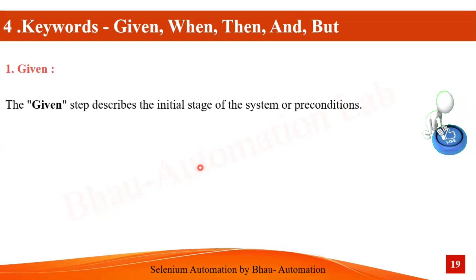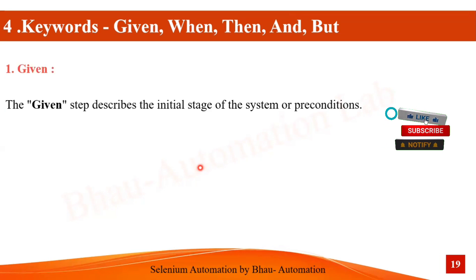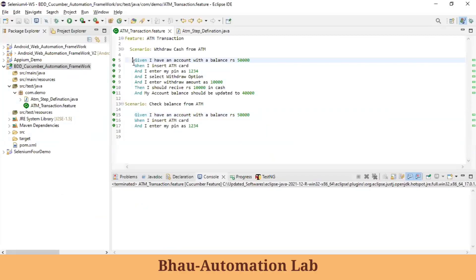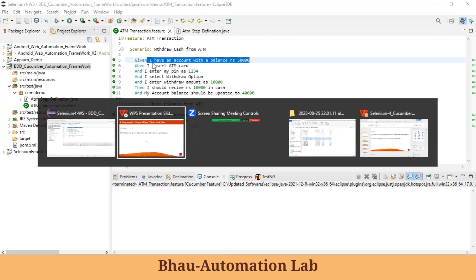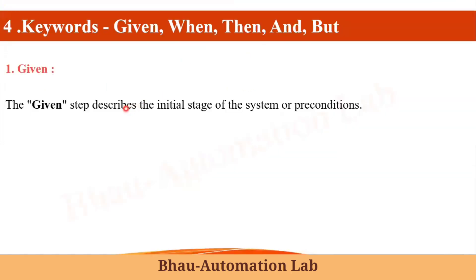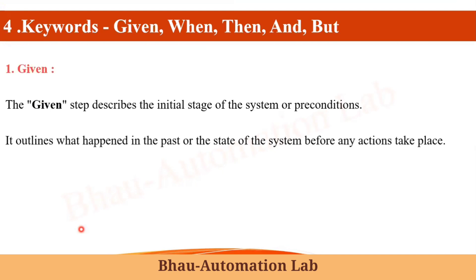First of all, let's understand the keyword 'Given'. The Given step describes the initial state of the system or its preconditions. For example, 'Given I have an account with the balance of Rs. 50,000' — this defines the precondition before we move to the next step. It describes the initial stage or precondition of the system.